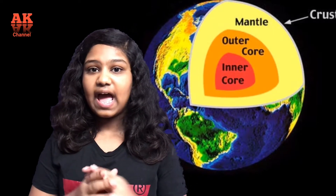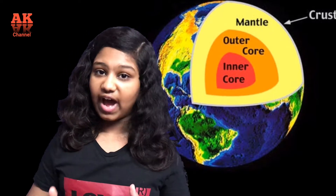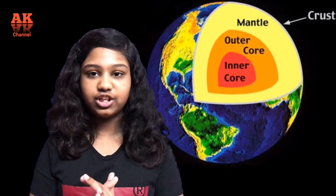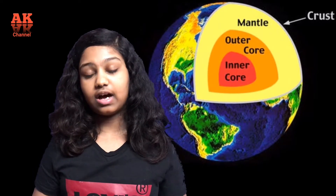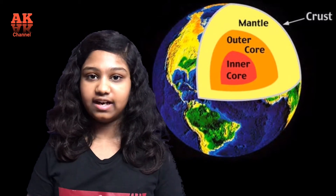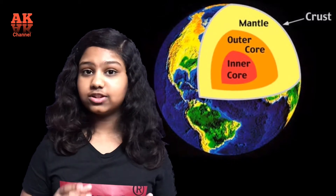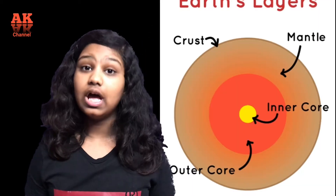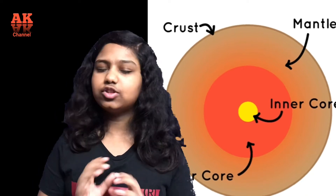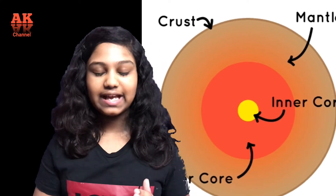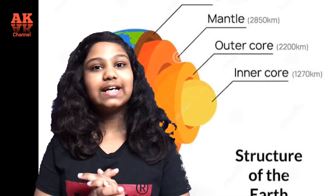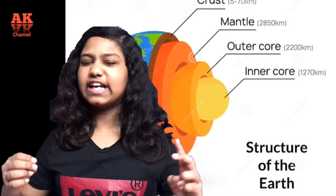Next comes the mantle. The upper layer of the mantle is just like the Earth's crust, so scientists group the crust and the upper layer of the mantle together and call it the lithosphere. The lower layer of the mantle is entirely molten rock, with temperatures varying between 2,000 degrees Celsius and 4,000 degrees Celsius.